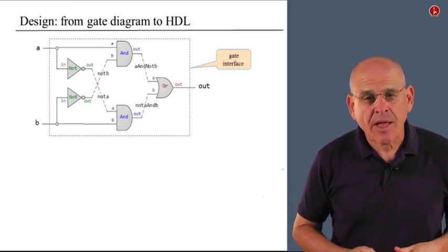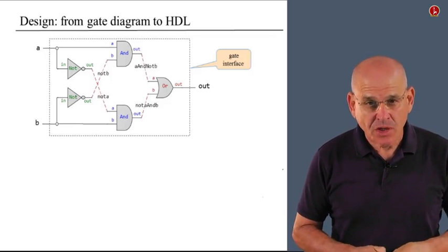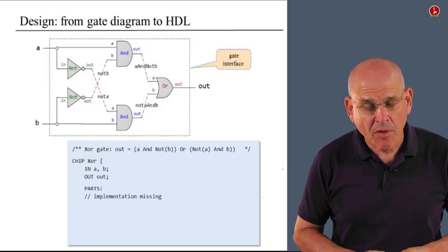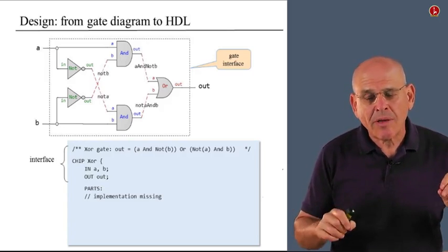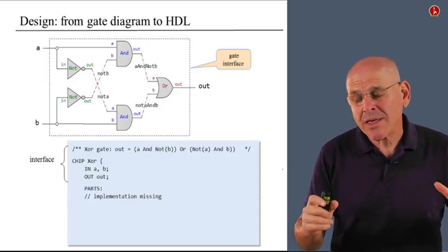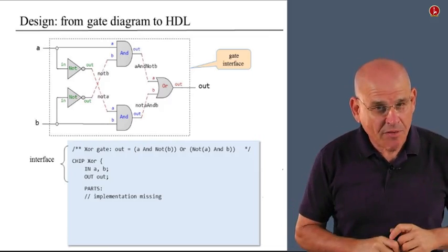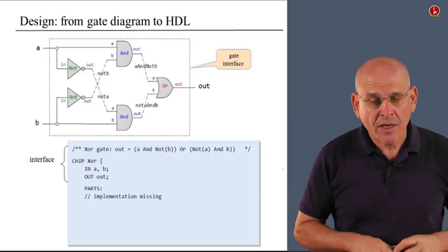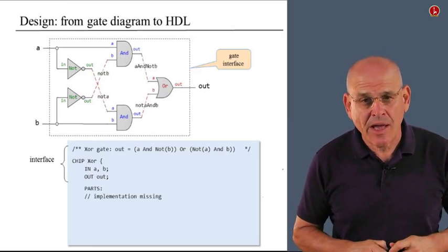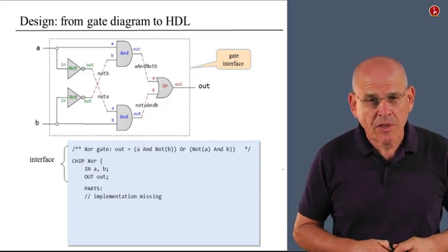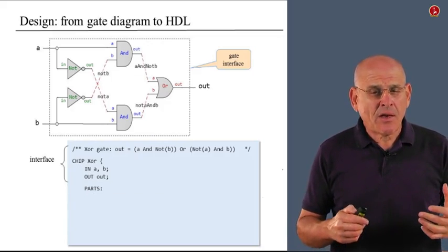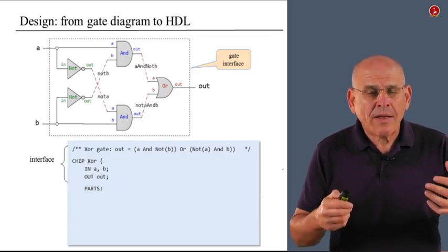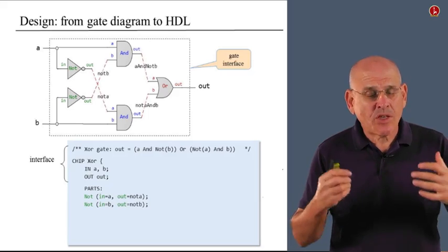Now we can actually move on and implement this diagram using HDL. We return to the HDL stub file that we had before. I use the term stub file to describe a partial HDL implementation that actually describes only the chip's interface. Typically, it comes with the statement 'implementation missing' or 'put your code here' and so on and so forth. This is the contract that we actually have to implement. And now, indeed, we are going to focus on the implementation section of this file.